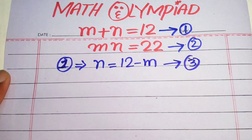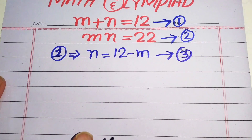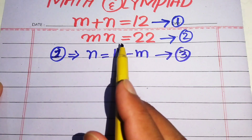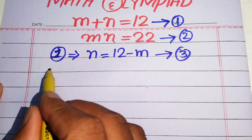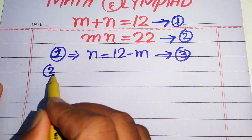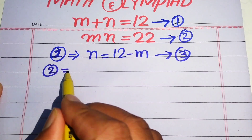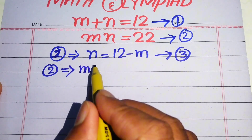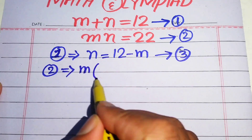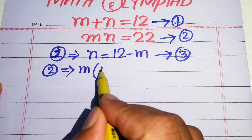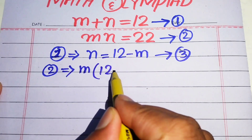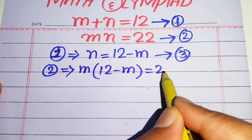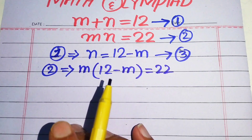In the next step we substitute the value of n from equation number 3 into equation number 2, so equation number 2 becomes m times (12 minus m) equals 22.